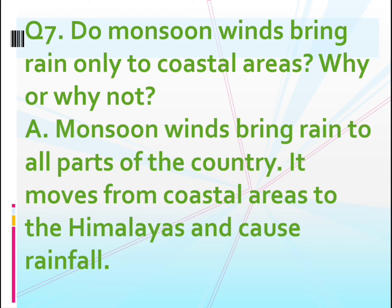Can you see in the picture, children? Not only in the coastal areas, but in the middle areas too — you can see in the picture that the winds are rushing towards the land and causing rain for many parts of our country. It moves from coastal areas to the Himalayas and causes rainfall.